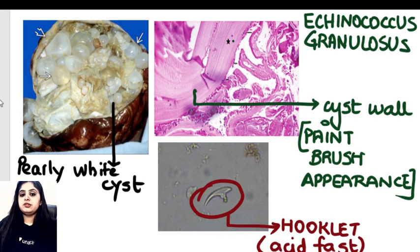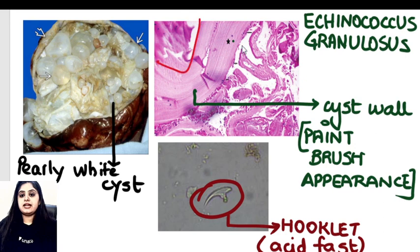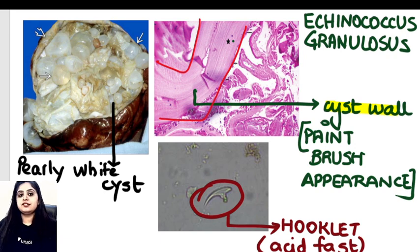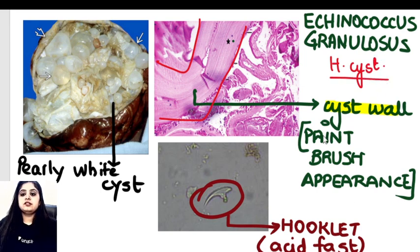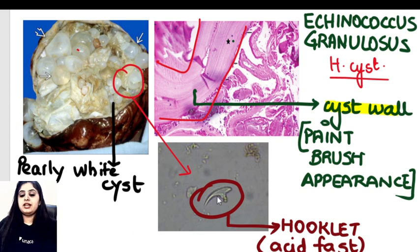The first thing that we see are a lot of pearly white cysts. Apart from that, the cyst wall highlighted here gives a classical paintbrush appearance — as if you've taken a brush and made a stroke of paint. We are obviously talking about hydatid cyst. All of you know hydatid cyst is caused by Echinococcus granulosus, the dog tapeworm. The fluid inside these cysts has hooklets, and everyone can visualize these hooklets really well.